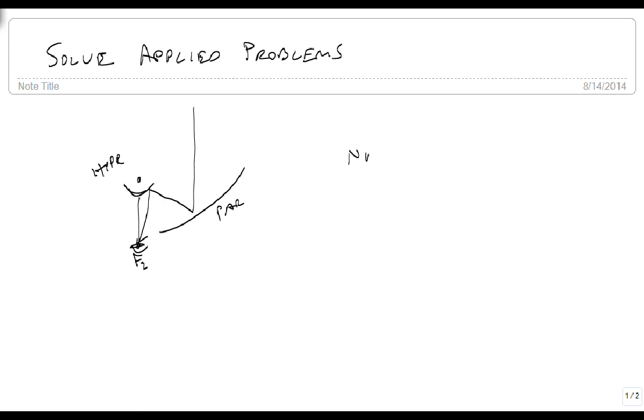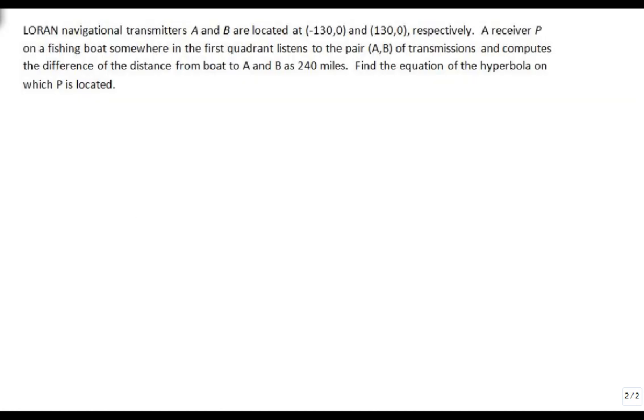The last way that it's used is in navigation systems for echolocation and different things. We're going to talk about the LORAN navigational transmitters A and B. We're going to suppose that they're sitting out at (130, 0) and (-130, 0), respectively.